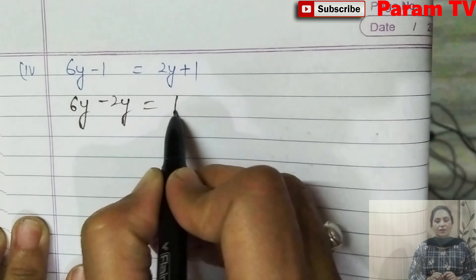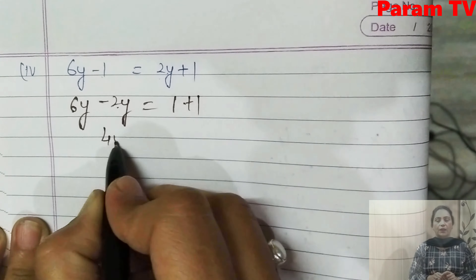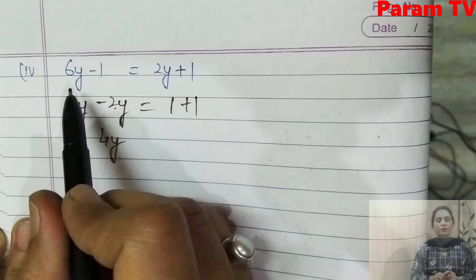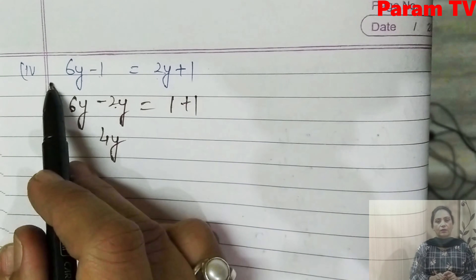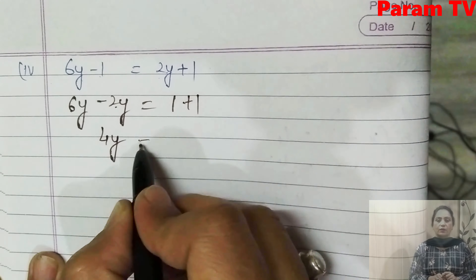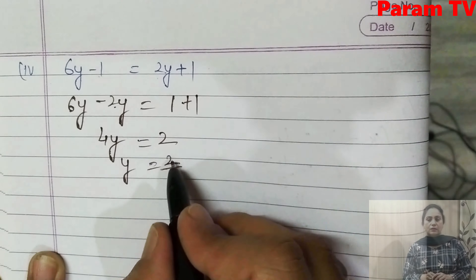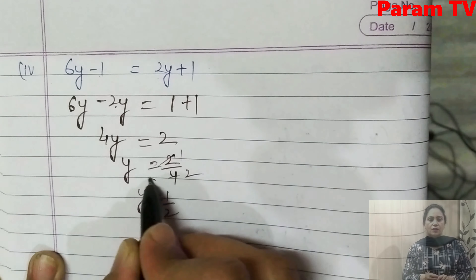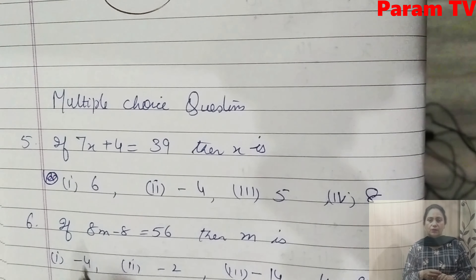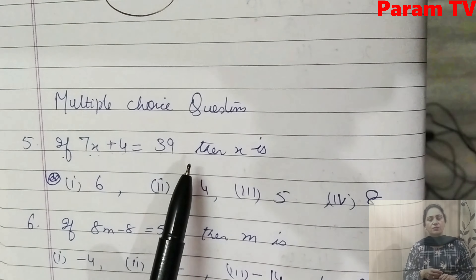Next: 6y - 1 = 2y + 1. Now see — y terms go to one side and constants to the other. So 6y - 2y = 1 + 1, giving 4y = 2. Transposing terms is very necessary when both LHS and RHS have variable terms. So y = 2/4 = 1/2. Therefore y = 1/2 is the solution.